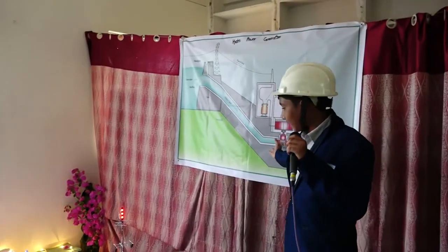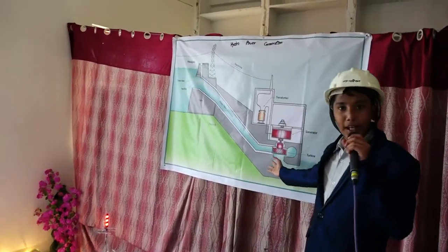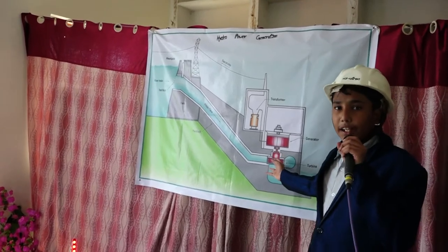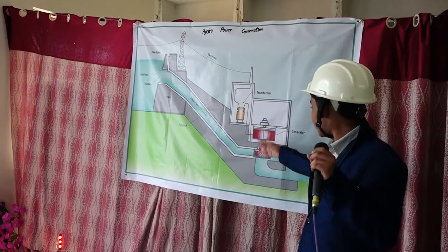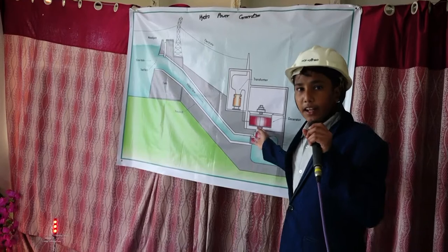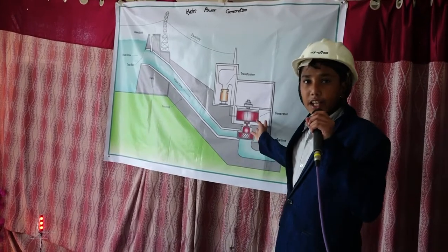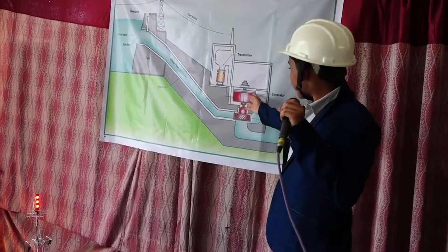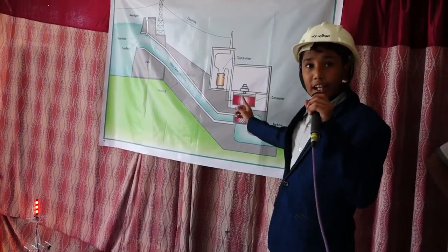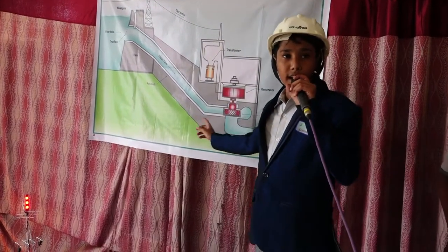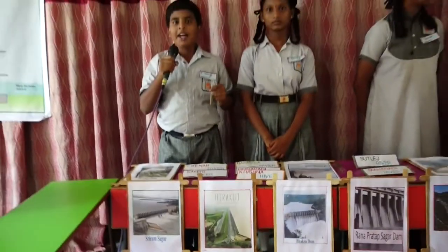Turbine: A turbine has a light fan-like structure having many number of blades. It has an ability to rotate on its axis. Generator: A generator is a device in which there is a rotation of a coil which produces a strong magnetic field around it. This leads to the alternating current.